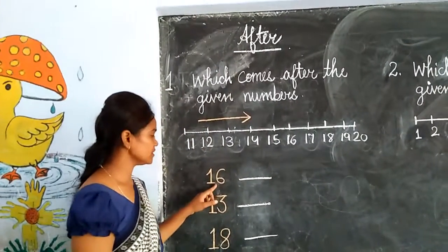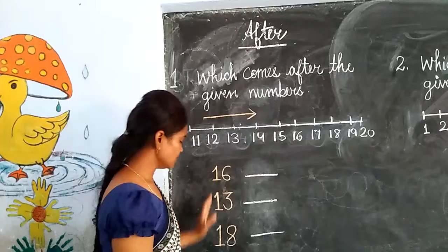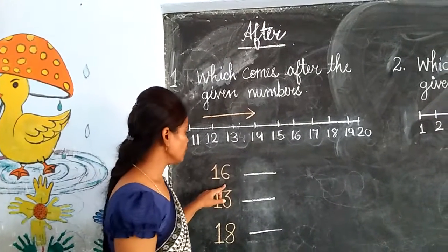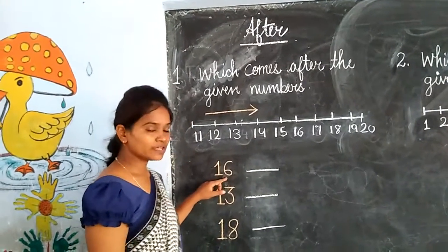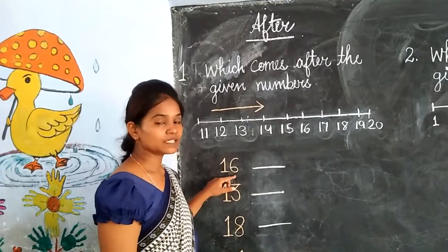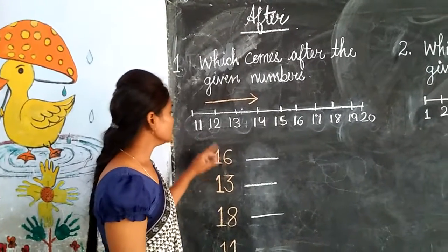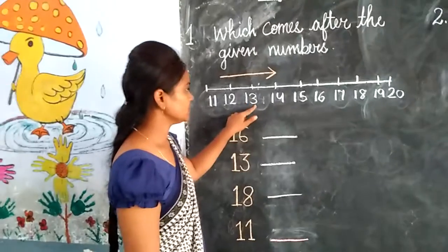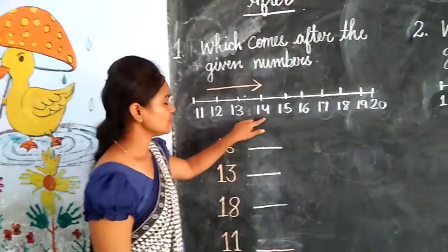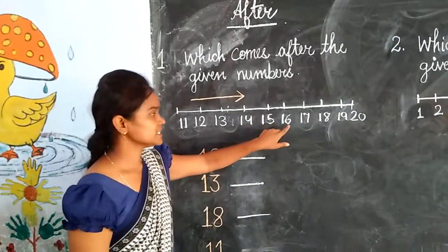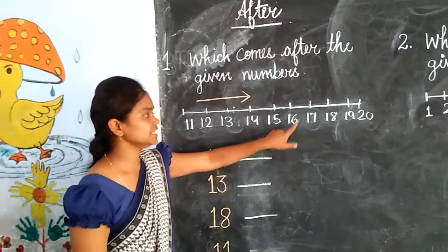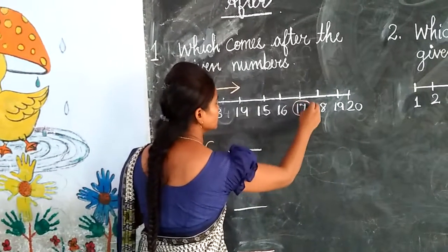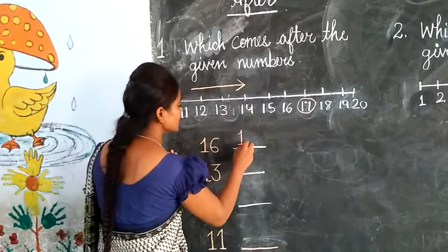I have written some numbers. The first number is 16. Now we will find out what comes after 16. Let's count: 11, 12, 13, 14, 15, 16. What comes after 16? Yes — 17. We will write here: 17.